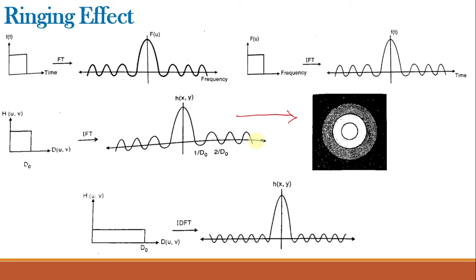The conclusion is that there should not be sharp cutoffs. As long as there are sharp cutoffs, their spatial representations will be sinc functions and hence ringing will always be present for ideal low pass filters. If we increase D0, the sinc function becomes narrow and the ringing effects look more pronounced. To eliminate ringing we must eliminate the sharp cutoffs in the frequency domain. This is the reason why ideal filters are rarely used for low pass filtering.